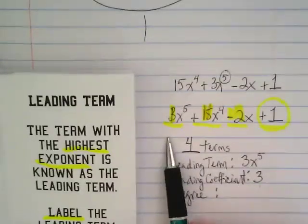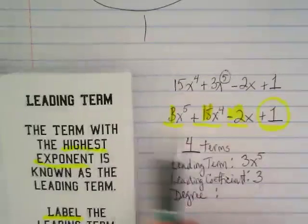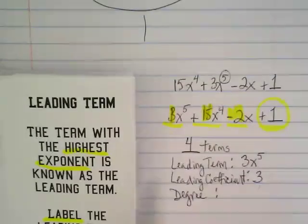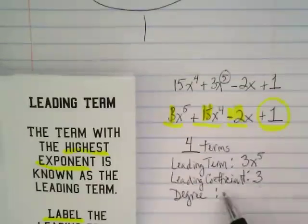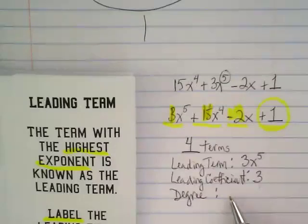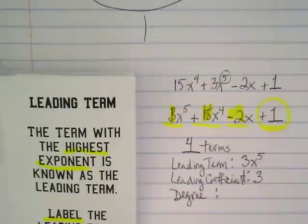My visual brain pictures this as like a train that's in the right order now. This is like the engine out front. And that 3 got pushed all the way to the front because it's attached to that x to the 5th power. The degree of this polynomial is the highest power that we have, which is 5.